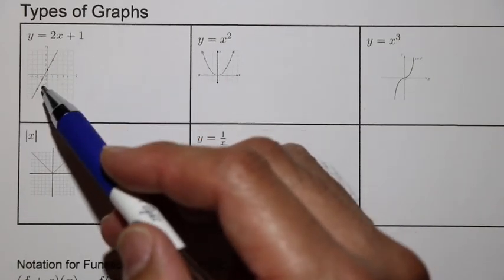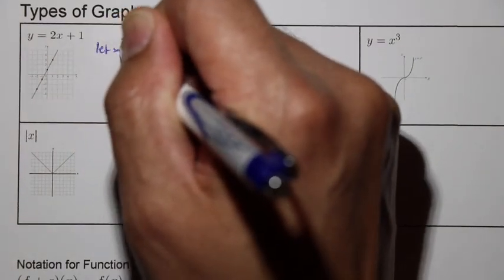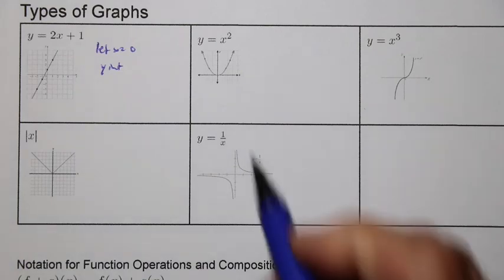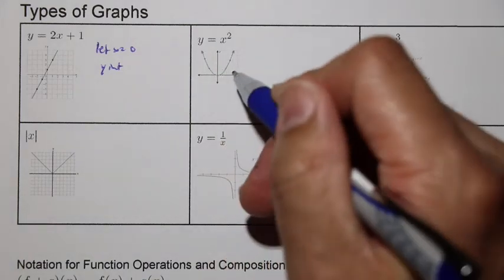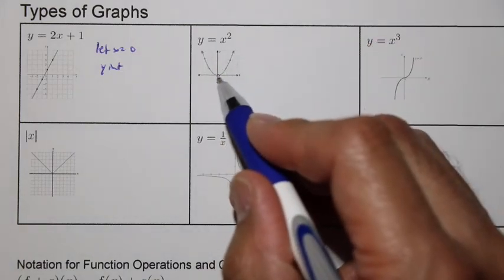Taking a look at types of graphs, you have linear graphs here. You can find the x-intercept by letting x equal zero. That will find us the y-intercept. We might have a quadratic graph here. You can see how this is a minimum, so that is a range, important value.